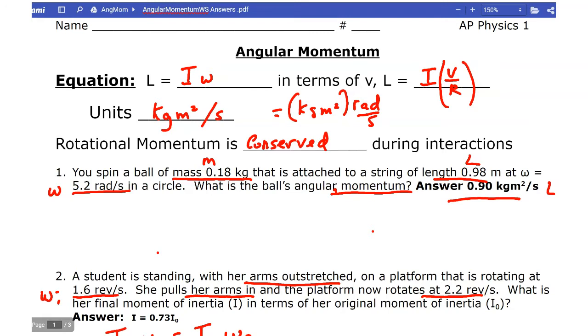Let's take a look at a problem. We'll be able to use this brand new equation. So L, what you have is a mass on a string, a certain length, they give you the length, and it's going with a certain rotational velocity. They want you to find the angular momentum.